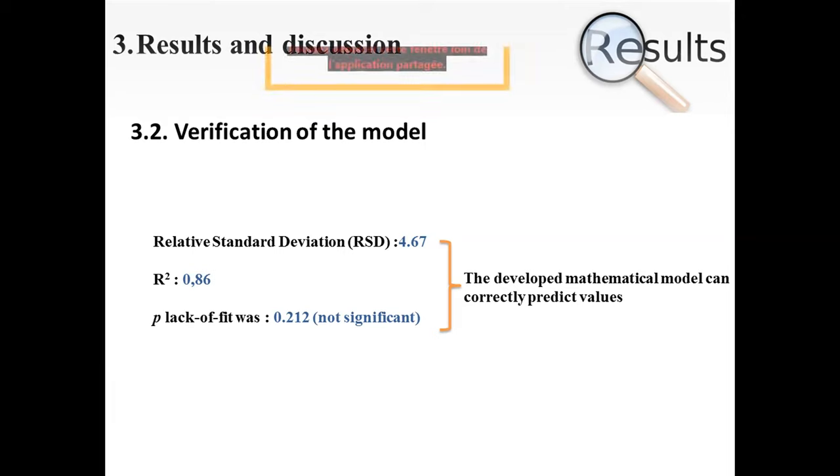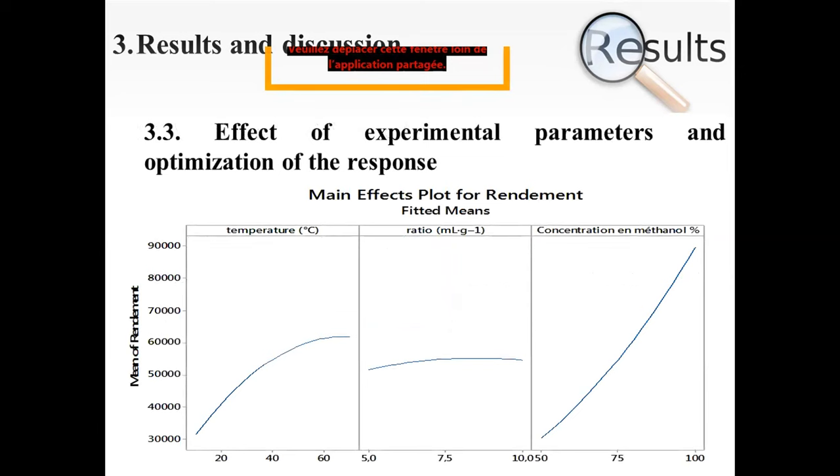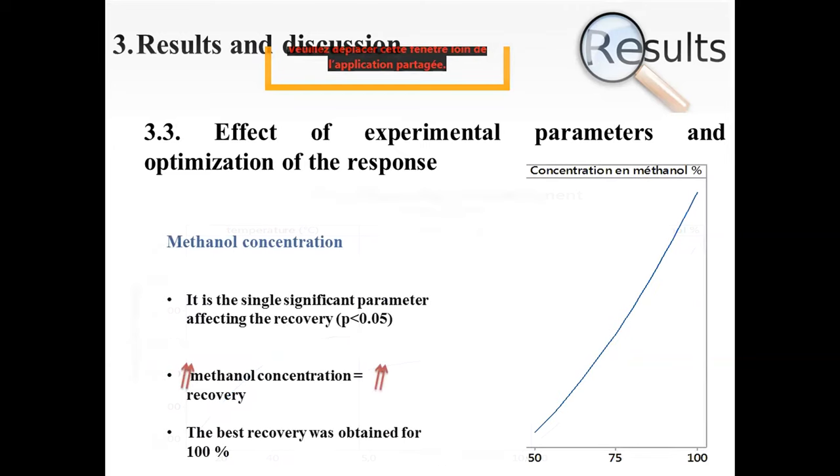When studying the effect of experimental parameters on the recovery of phenolic compounds, we have found that methanol concentration was the single significant parameter affecting the recovery of phenolic compounds. We can see from the p-value which is lower than the significant value. We can see from the figure that the recovery increased proportionally with the methanol concentration and the highest level was recorded by the methanol concentration of 100%.